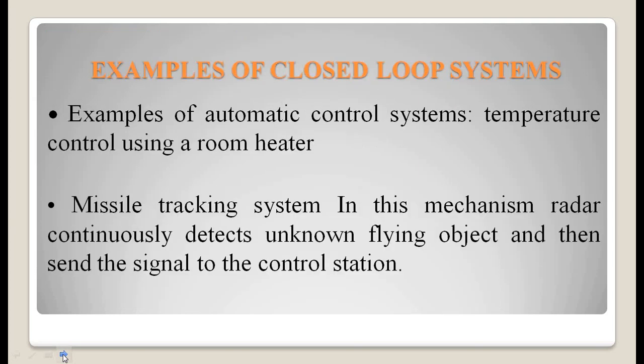Examples of closed loop systems: temperature control using a room heater, and a missile tracking system. In the missile tracking mechanism, radar continuously detects an unknown flying object and sends the signal to the control station.